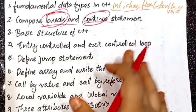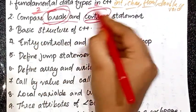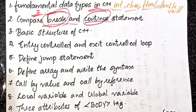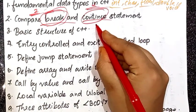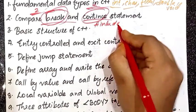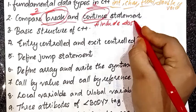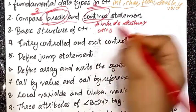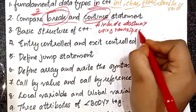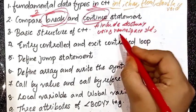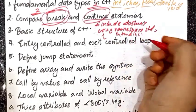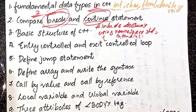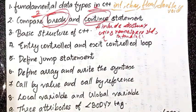When a continue statement is executed in a loop, it skips the remaining statements in the loop and proceeds to the next iteration of the loop. After 3 marks, it is under end point and will be added to the difference between questions as a separate upload. Basic structure of C++: hashing, load iostream, using namespace std, return zero.